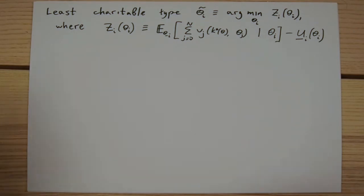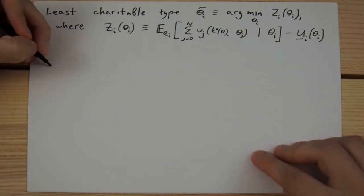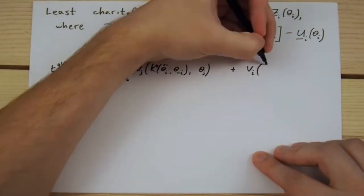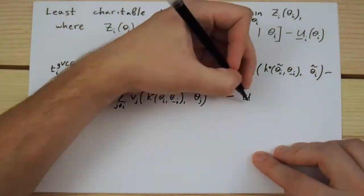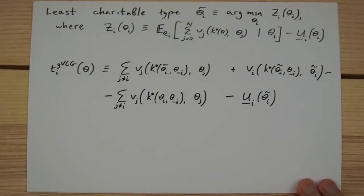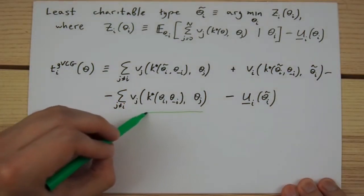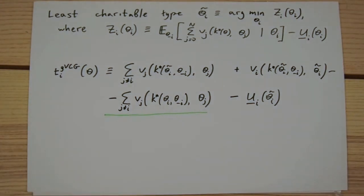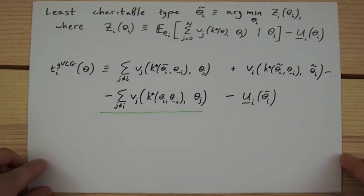Now we can define the generalized VCG transfer rule as follows. As you can see, this transfer rule uses Groves' transfers as its base, but selects a different type independent constant compared to the regular VCG mechanism.